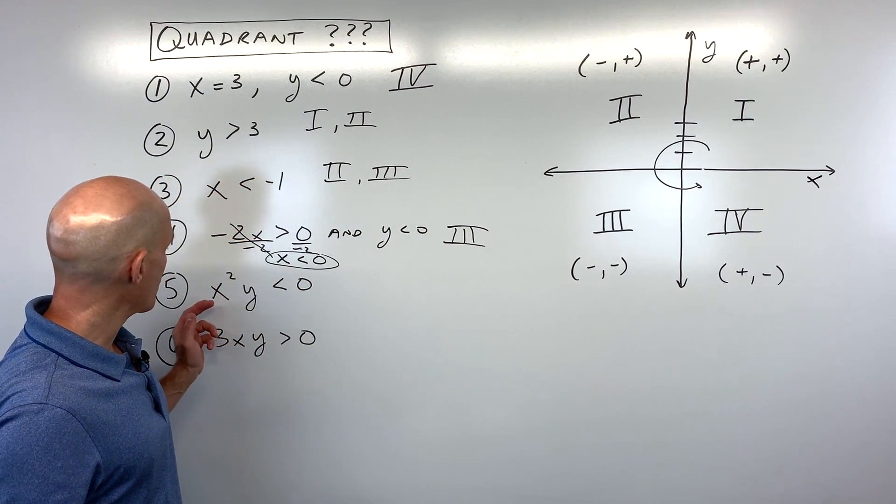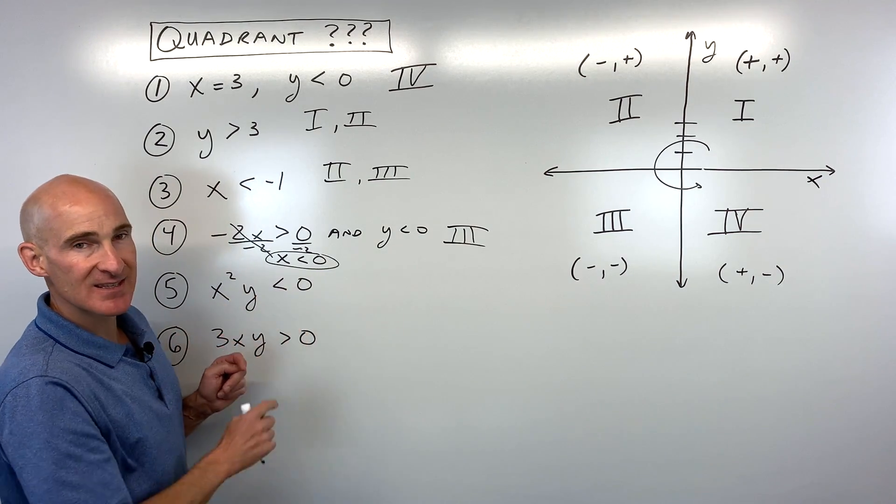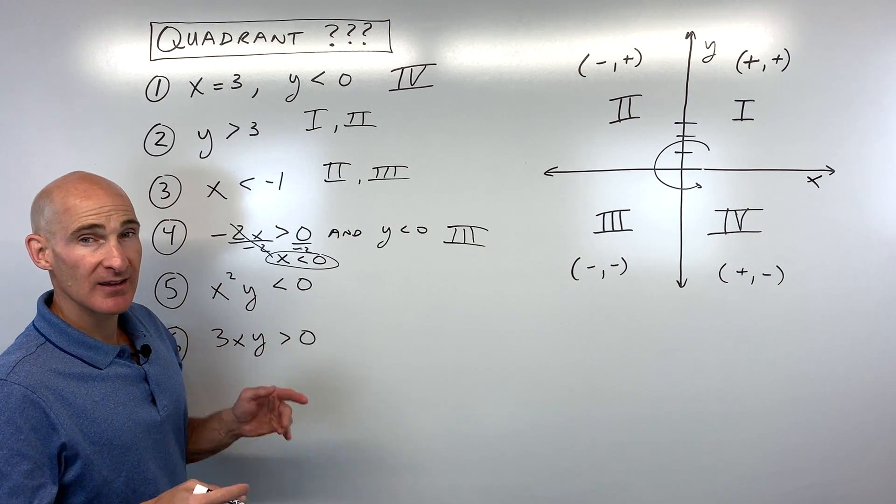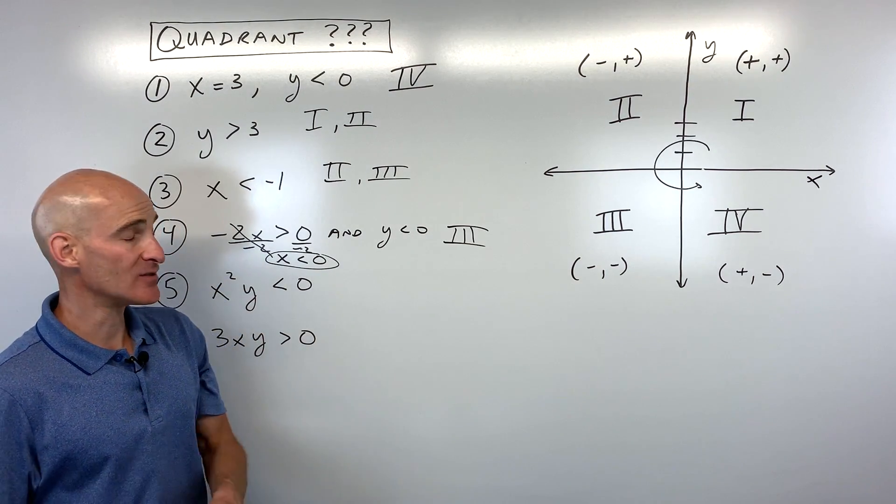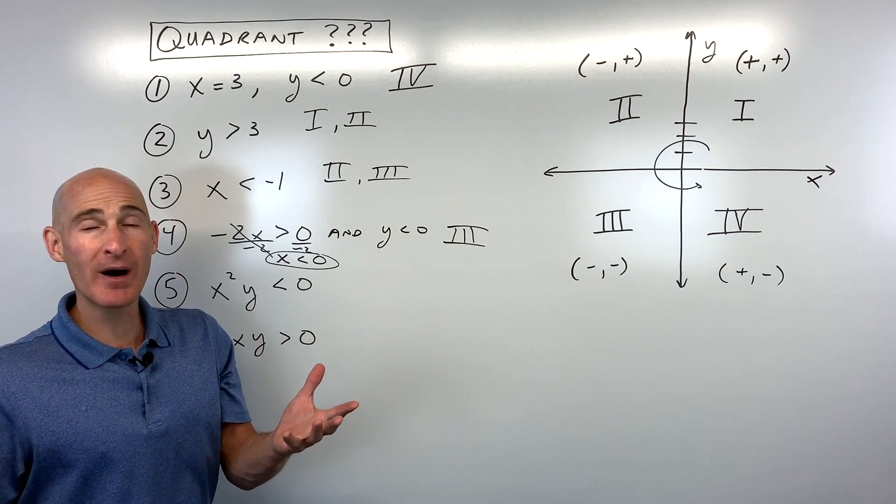Let's look at another one. Let's say number five here. This one's a little bit more challenging. So x squared times y is less than zero. Now this one's kind of interesting because when you have a negative value squared, a negative times a negative is a positive. If you have a positive value squared, a positive times a positive is also positive, right?